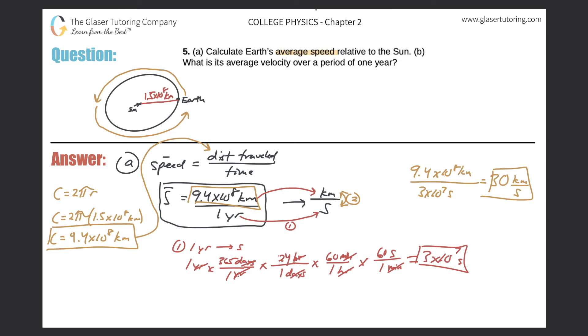So now moving on to part B, it says what is its average velocity over a period of one year? So let's remember the velocity formula. I'm going to write it down here on the lower left. The average velocity is going to be the change in displacement over the change in time. So let's really focus in on this numerator value, change in displacement. Now remember, that value can be broken down into the final displacement of the object minus the initial displacement.